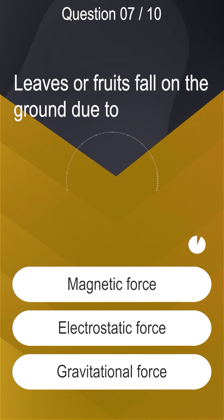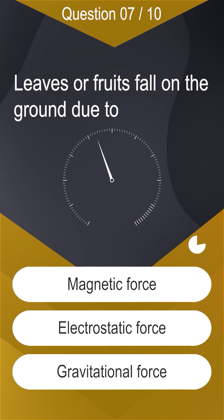Leaves or fruits fall on the ground due to magnetic force, electrostatic force, gravitational force.